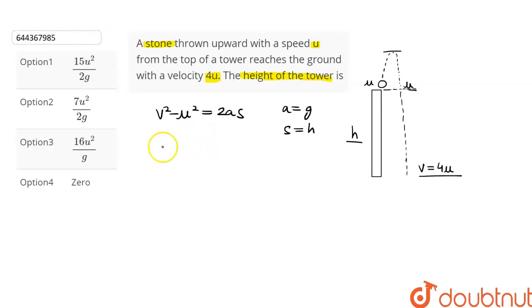Let's substitute the values in this equation. This will give us v is 4u, so (4u)² - u² = 2gh.